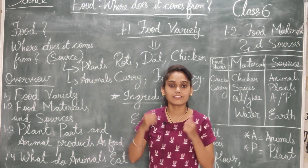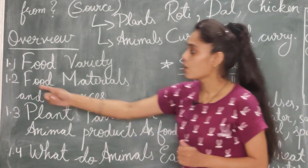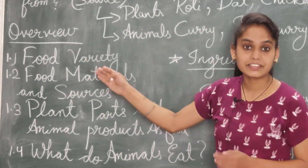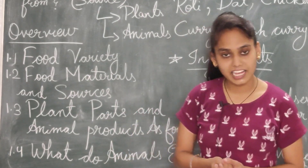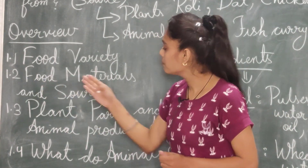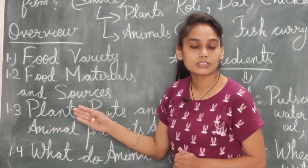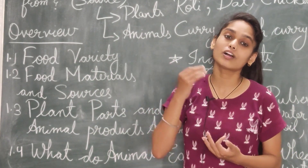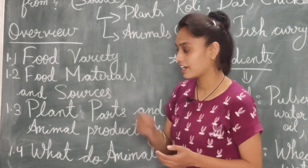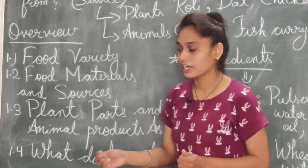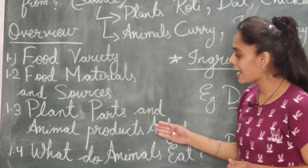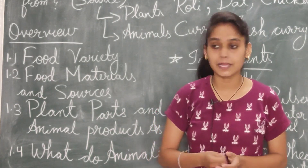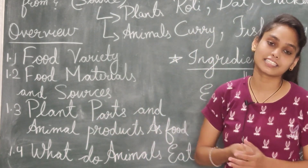अब इस chapter में हमें कौन-कौन सी चीज़ें cover करनी हैं। 1.1 में हम food की varieties के बारे में पढ़ेंगे। 1.2 में food materials and its source — food के materials और उसके source, मतलब वो हमको कहां से मिला, उसके बारे में पढ़ेंगे। 1.3 में plants parts and animal products as food।